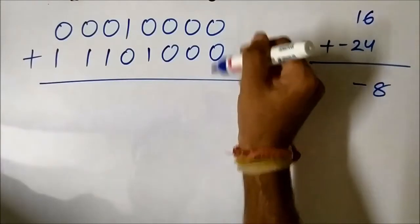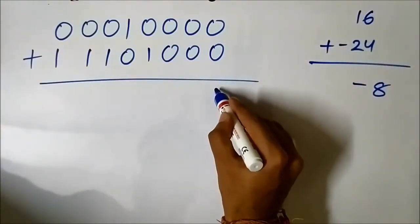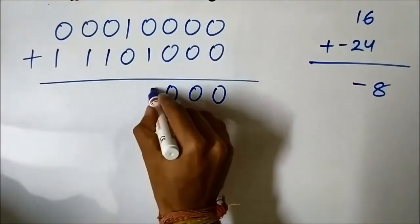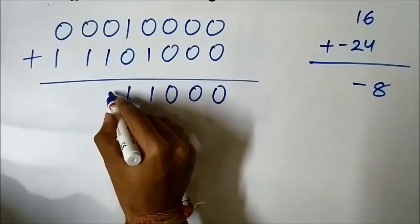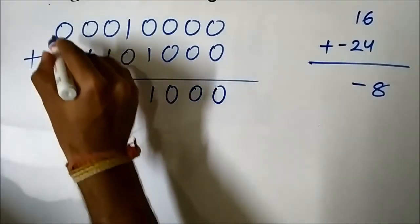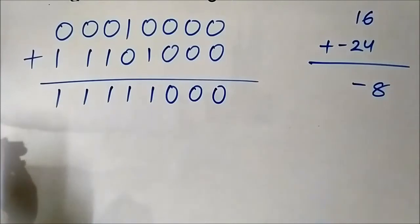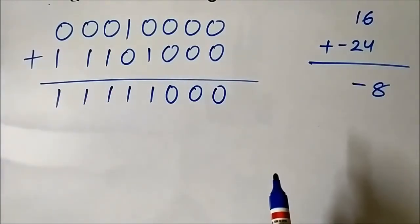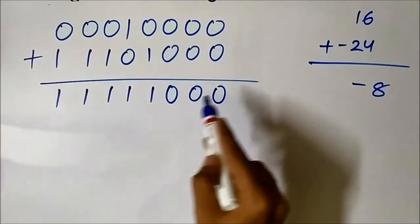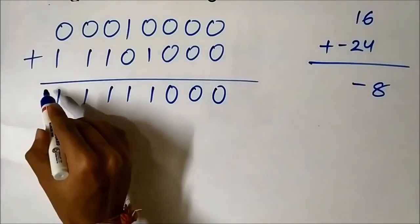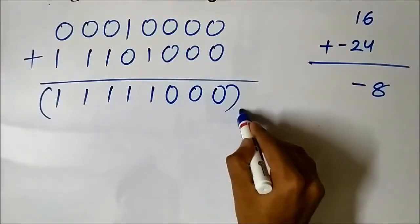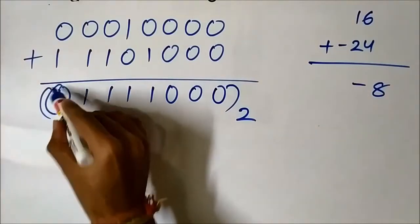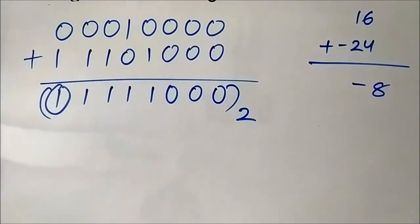Let us perform the addition: 0 plus 0 is 0, 0 plus 0 is 0, 0 plus 0 is 0, 0 plus 1 is 1, 1 plus 0 is 1, 0 plus 1 is 1, 0 plus 1 is 1, 0 plus 1 is 1. This is the result. Now this result is in 2s complement form — it is a signed number. The MSB (sign bit) is 1, so it is a negative integer.